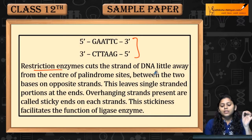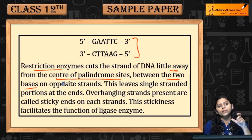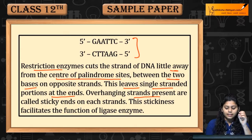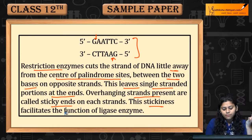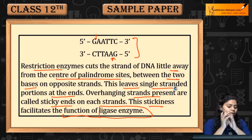Restriction enzyme cut करेगा strand of DNA को little away from the center of palindromic site. Between the two bases on opposite strand, ये leave करेगा single-stranded positions at the end — overhang हो जाएंगे strands, जो sticky होंगे। Stickiness facilitate करती है function of ligase enzyme — sticky ends पर ligase enzyme act करेगा और join कर देगा।